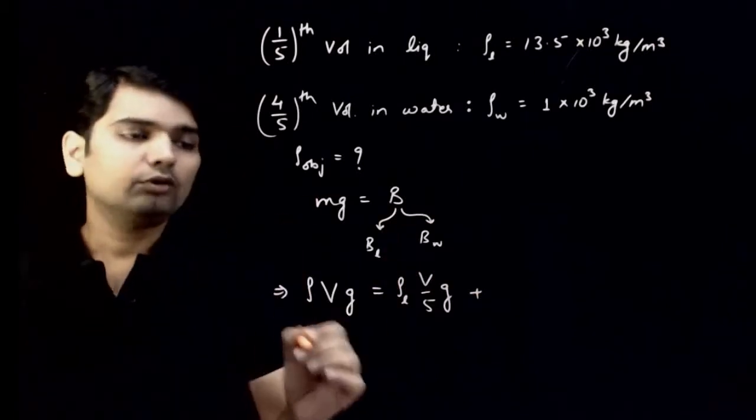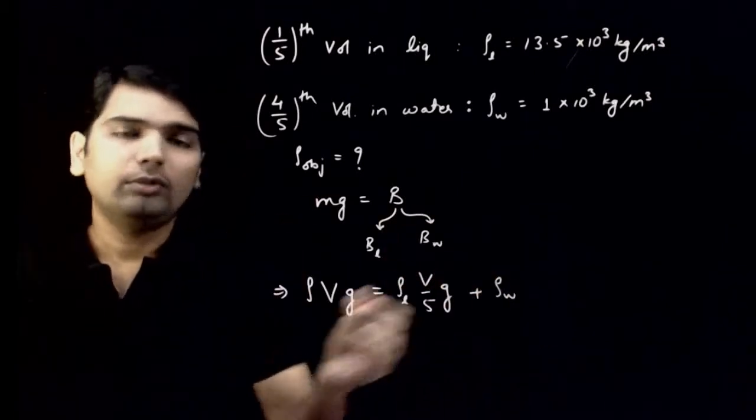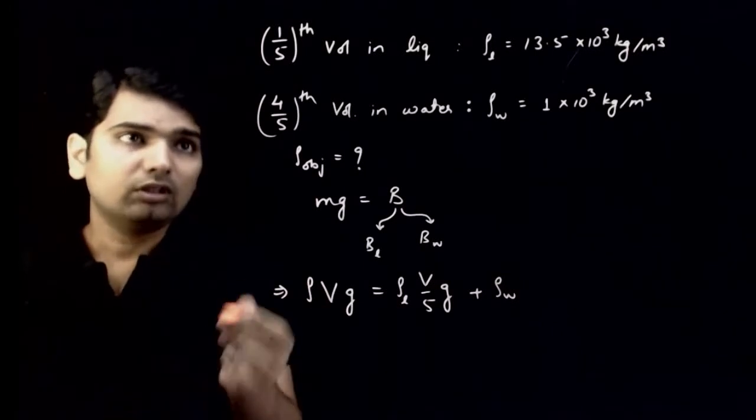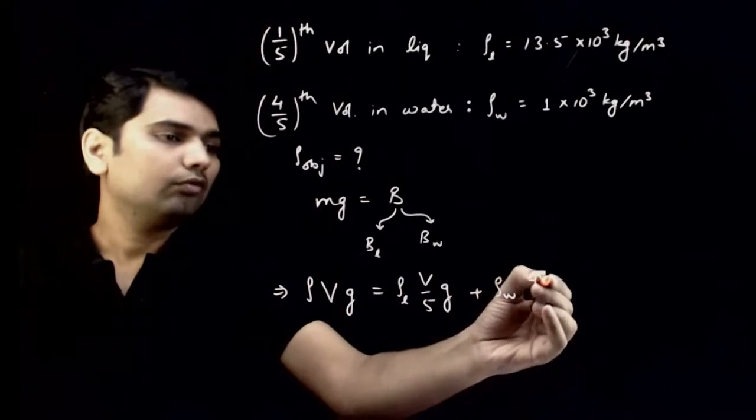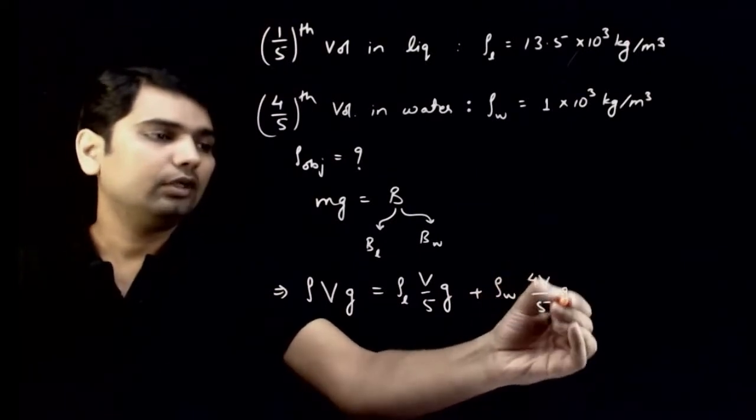Buoyant force of water will be density of water multiplied by volume of water displaced. That is four-fifths. Remaining means four-fifths, 4V by 5 into g.